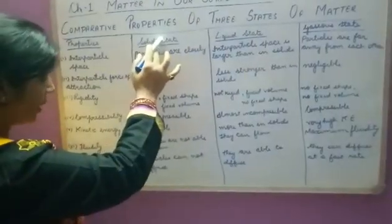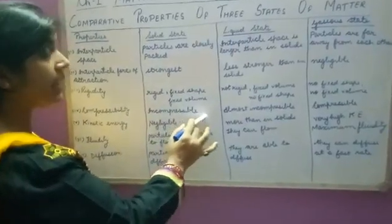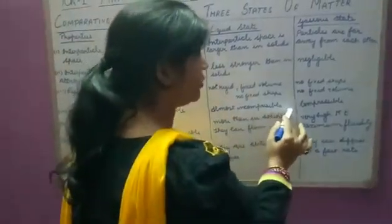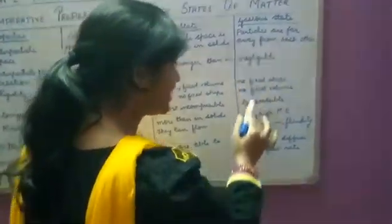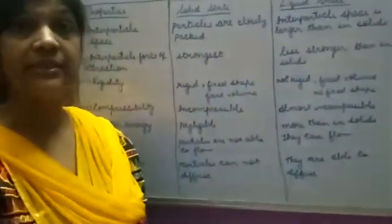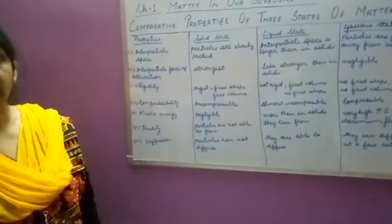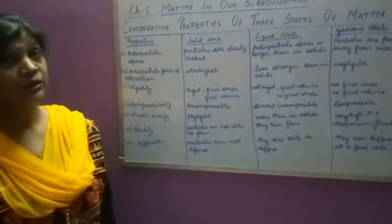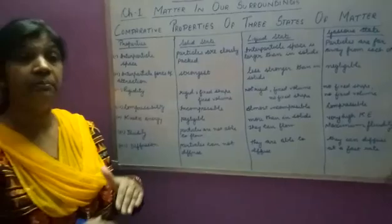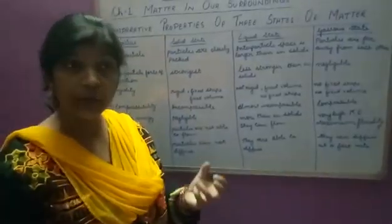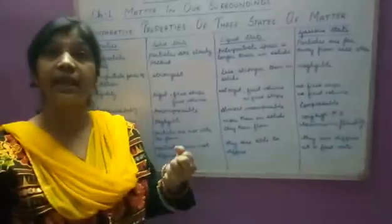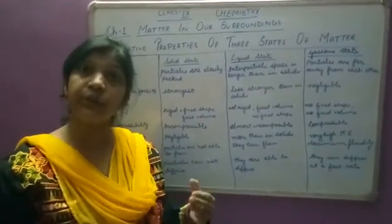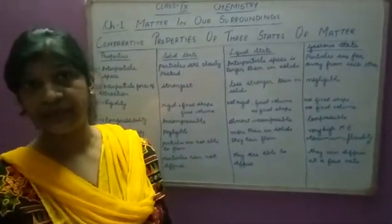In solid state, particles are incompressible. In liquid state, they are almost incompressible. In gaseous state, particles are compressible. Some solids are compressible — for example, sponge. In a sponge, there are many small pores in which air particles remain captured. On applying pressure, air escapes and therefore it is possible to compress a sponge.